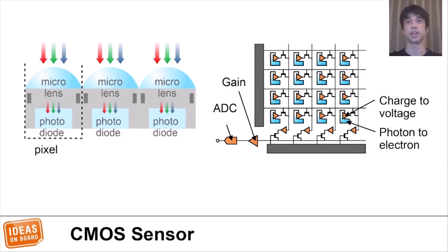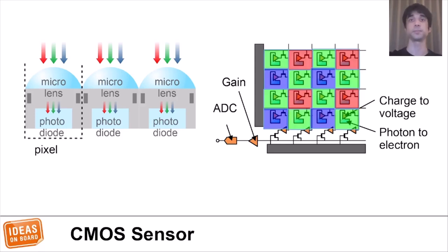The sensor has an array of light-sensitive photodiodes. Each of these photodiodes corresponds to a pixel, but it can only detect a level of light. So to detect color, each pixel gets a color filter, which only allows light of a specific color to pass through.